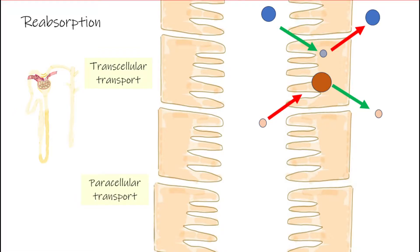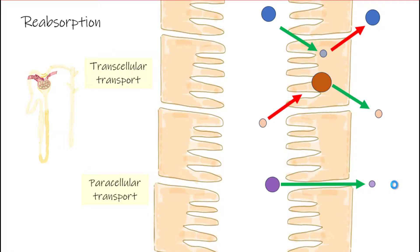For paracellular transport, substances move between the cells. For example, a substance in high concentration inside the tubular lumen and low concentration in the interstitial fluid may simply diffuse between the cells — a passive process. Once the material reaches the interstitial space, it easily enters the peritubular capillaries and is taken back to the body.